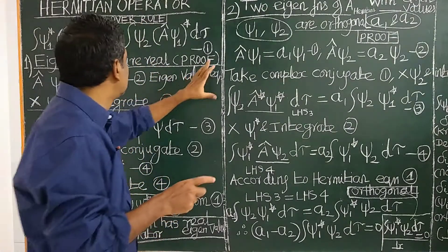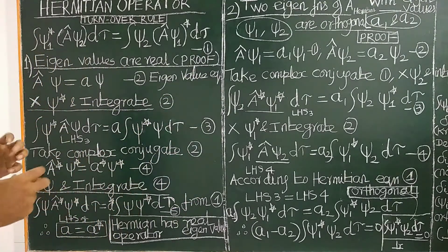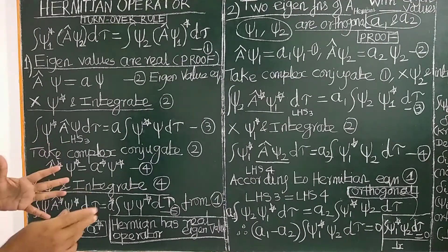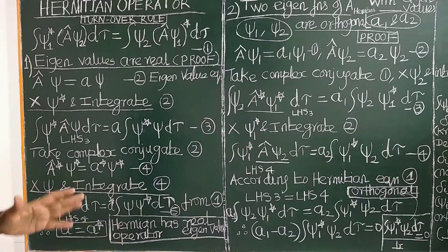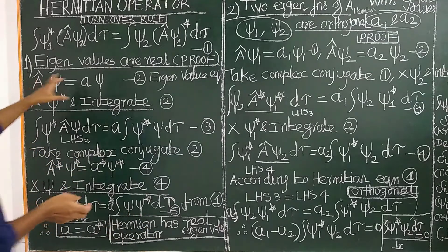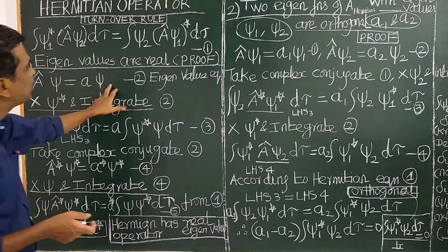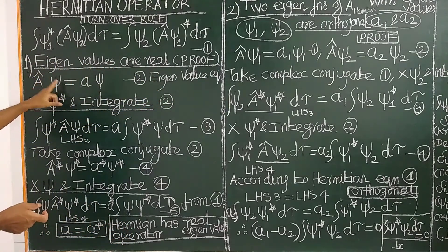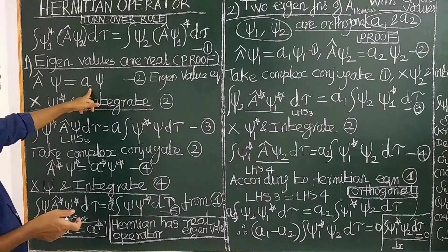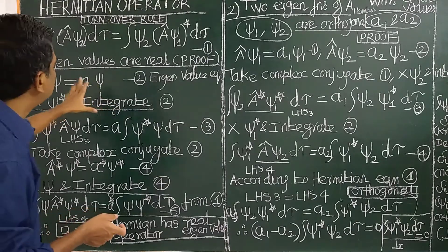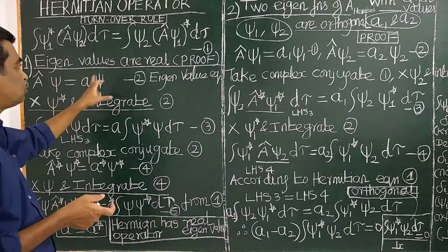Let us prove this. In general, the observable values are always real — they must be real. For example, energy values must be real; they cannot be imaginary. Let us consider the eigenvalue equation: A-cap operates on the wave function psi to give the eigenvalue A times psi. This eigenvalue is real — let us prove this now.